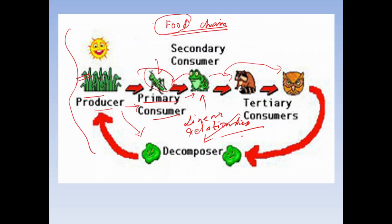So in a food chain you have a producer, a primary consumer, a secondary consumer, a tertiary consumer, and a decomposer.